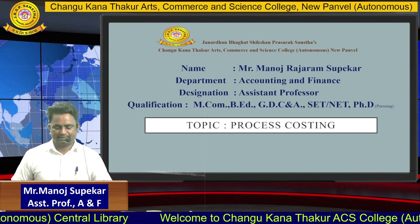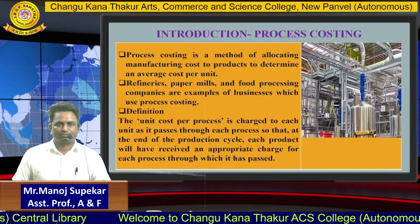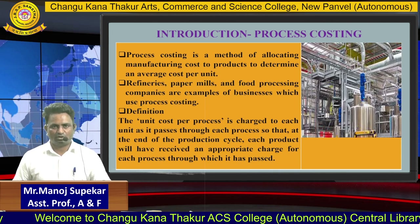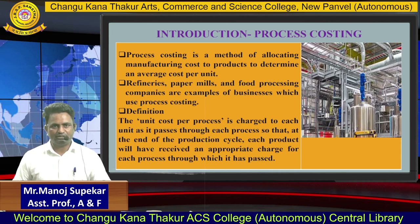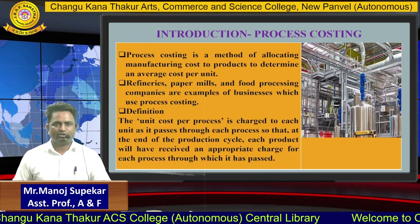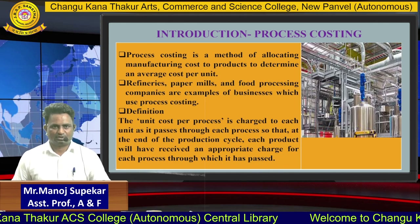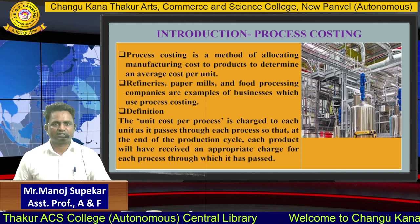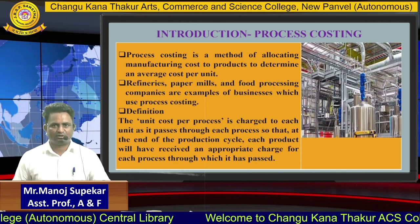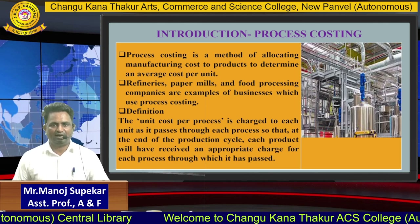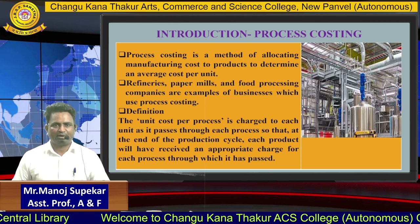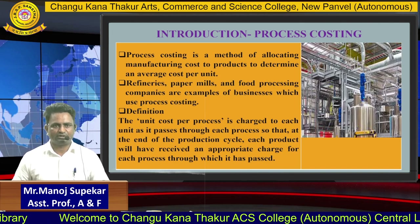What is the exact meaning of process costing? Process costing means nothing but to find out the cost of each product on a process-wise basis. Process costing is used in refineries, paper mills, food processing companies, and different kinds of companies that manufacture homogeneous goods.